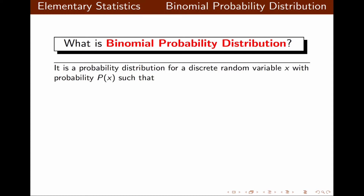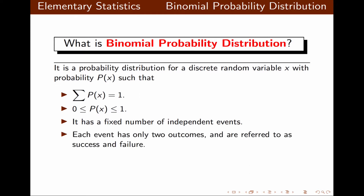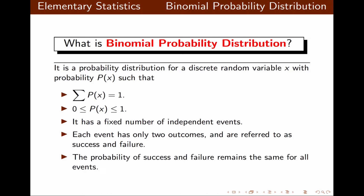For a discrete random variable X with probability P of X, the sum of all probabilities should be 1. Any probability should be between 0 and 1 inclusive. We should have a fixed number of independent events, and each event can only have two outcomes: one is success and the other one is failure.